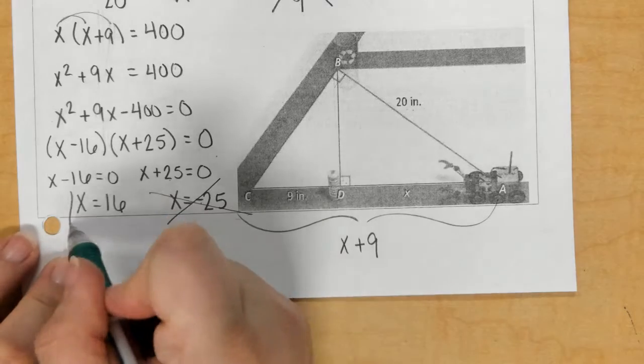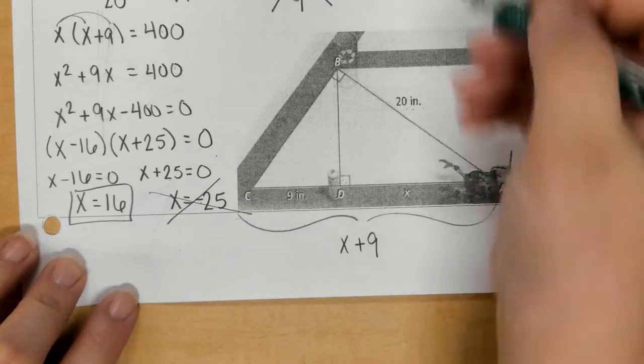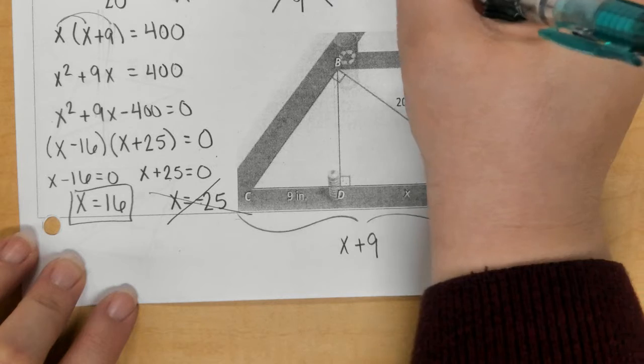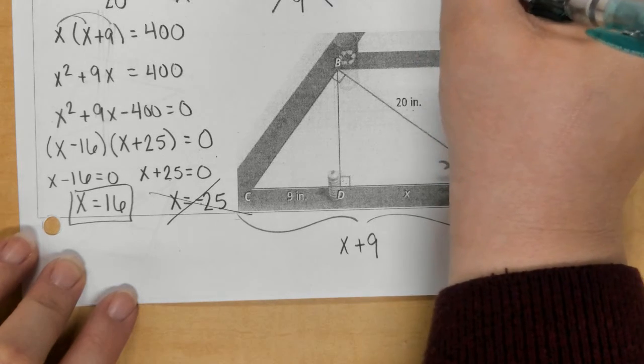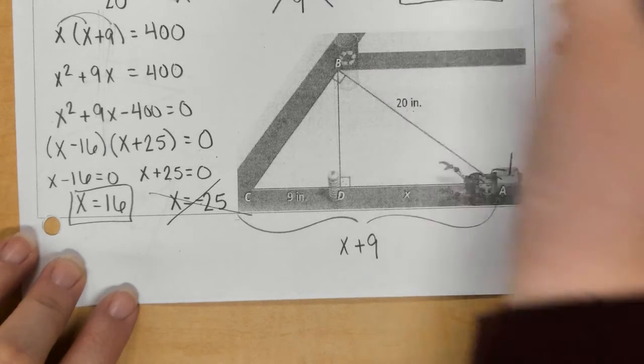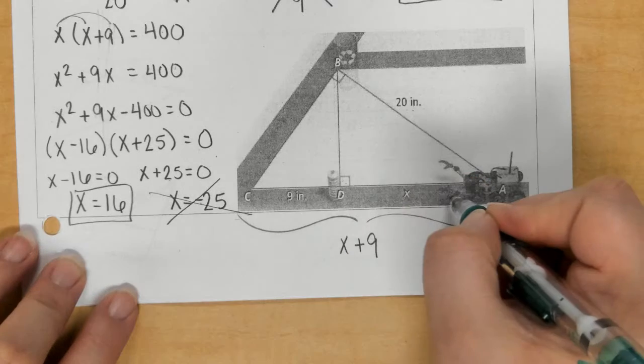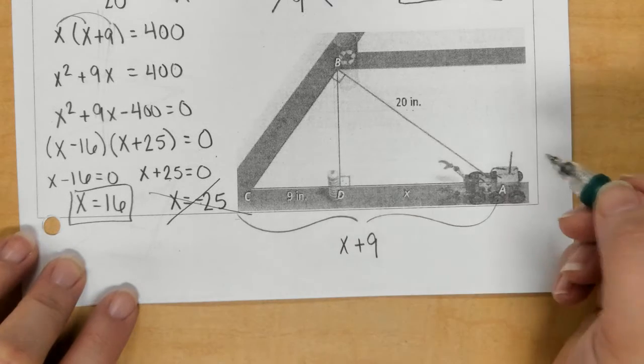So, we're going to go with the positive 16. So, to answer our question, X is 16 inches. So, the robot would have to travel from A to D, which is 16 inches, to get the plastic bottles.